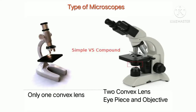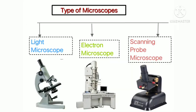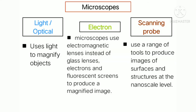Now let's look at the different types of microscopes. At the basic level there are simple and compound microscopes: a simple microscope has one convex lens, while a compound microscope has two — the eyepiece and the objective. Based on the number of eyepieces, there are monocular (one eyepiece), binocular (two eyepieces), and trinocular (three eyepieces). Based on how they produce images, microscopes are classified as light/optical microscopes, electron microscopes, and scanning probe microscopes.